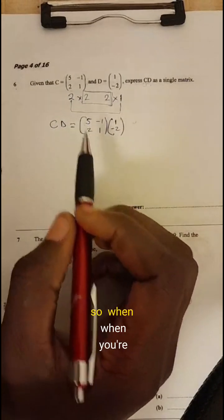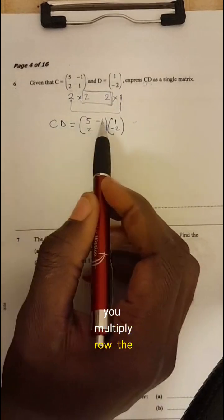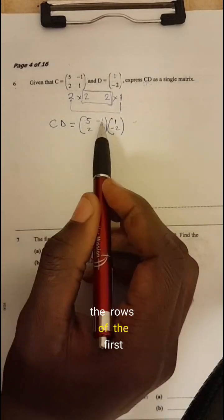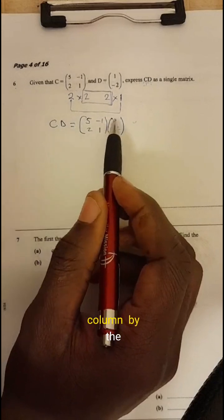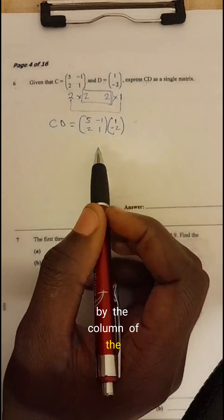So when you're multiplying matrices, you multiply the rows of the first matrix by the column of the second matrix.